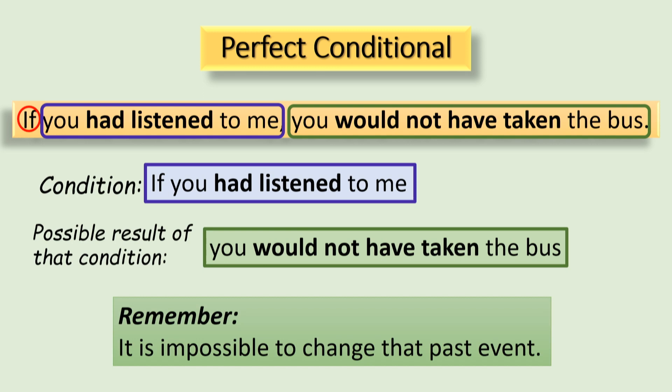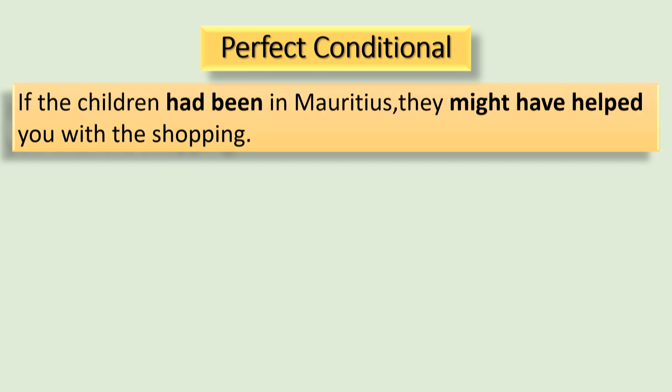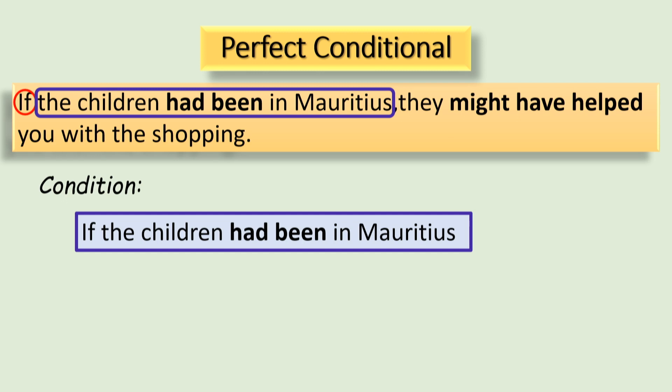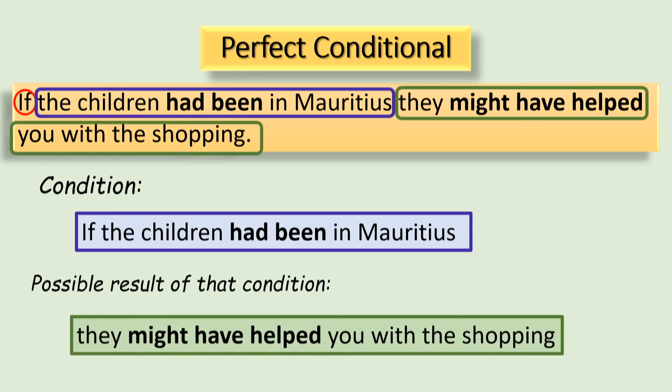Again, it is impossible to change that past event. Another example: 'If the children had been in Mauritius, they might have helped you with the shopping.' Similarly, for this sentence, 'if the children had been in Mauritius' represents the condition, while 'they might have helped you with the shopping' represents the possible result of that condition. In this sentence, again, it is impossible to change the situation, as the children were not in Mauritius at the time when the event happened.